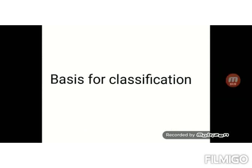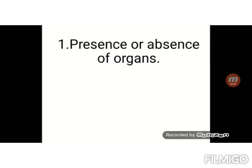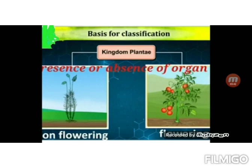Now let us look at the criteria for classification of plants. The first criteria for classification of plants is the presence or absence of organs. Root, stem, leaf, flower, etc. are the different organs a plant may have. Based on the presence or absence of these organs, the plants are classified.